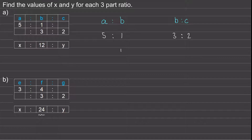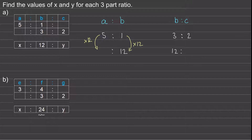So we can write 12 under the one and under the three. Now we need to work out the value of a when b is 12. To begin, we'll multiply the one by 12 to make 12, and by multiplying both sides by 12 the ratio keeps balance. Five times 12 is 60, so a is equal to 60.